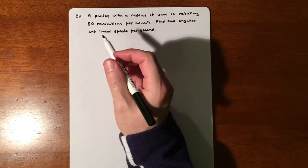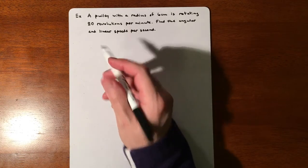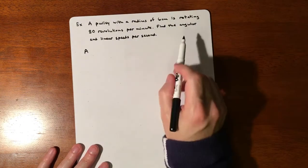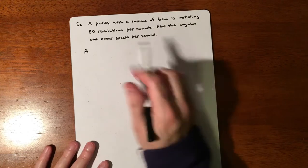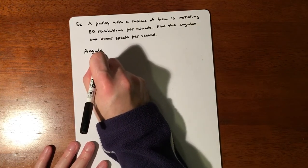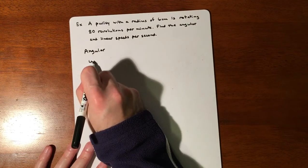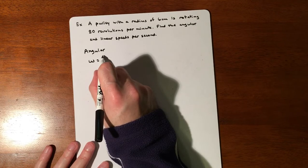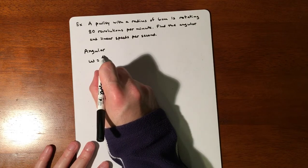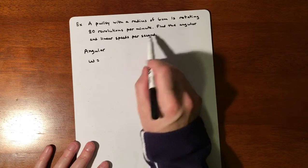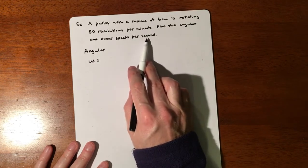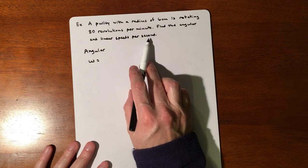Again, our angular is going to be a very different kind of answer, and the size of this thing doesn't matter, so the 6 centimeters is irrelevant. For angular, we have omega, and we're looking for degrees in a certain amount of time. They give us 80 revolutions per minute, but we want to find it per second. Let's start with radians just because 360 degrees times 80 is going to be a pretty large number.